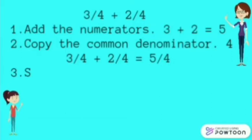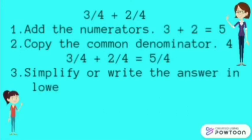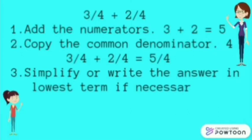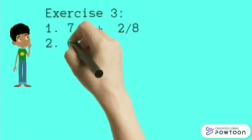Then, simplify. To simplify five-fourths, we will divide five by four. Five divided by four is one. One times four is four. And five minus four is one. So the answer is one and one-fourth.